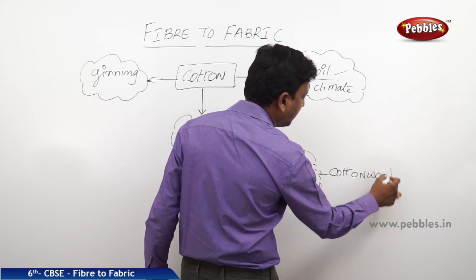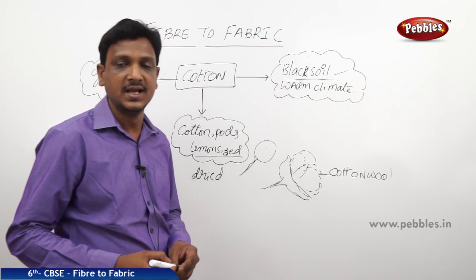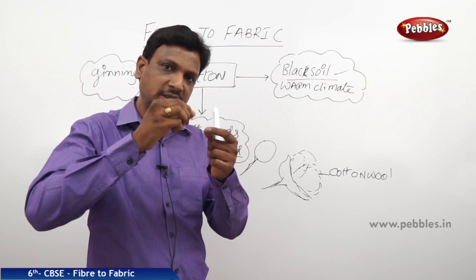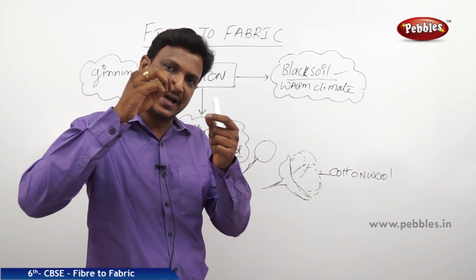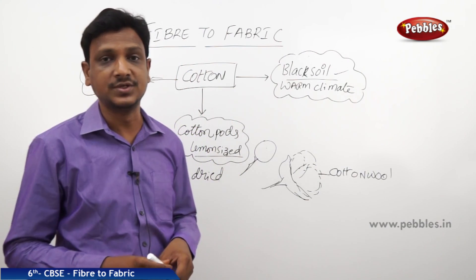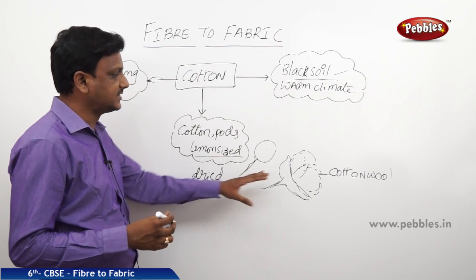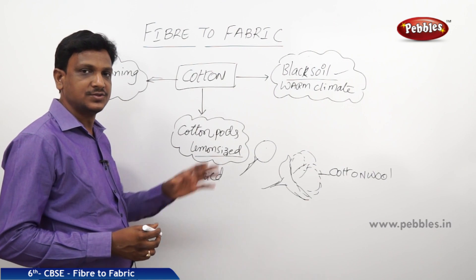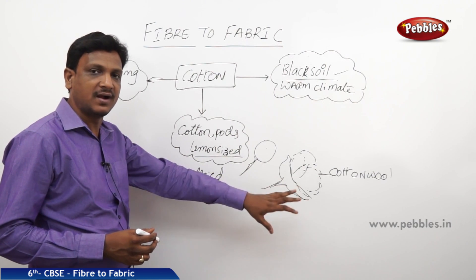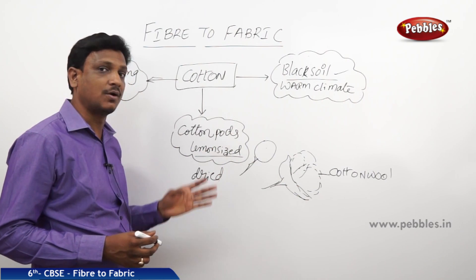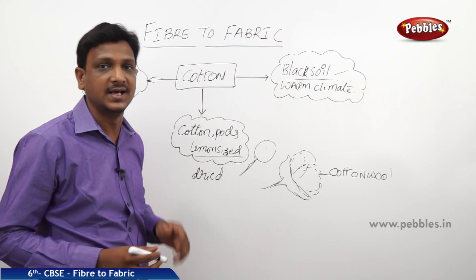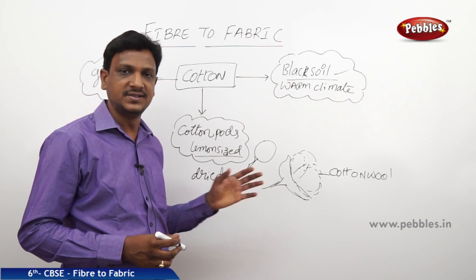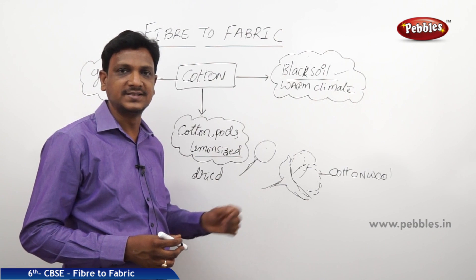Cotton wool is made up of cotton fibers. If you take a little cotton wool into your hand and pull the strings, you will find thin fibers — those are the cotton fibers obtained from the cotton wool. The cotton wool comes from the cotton pods and the cotton is white in color.